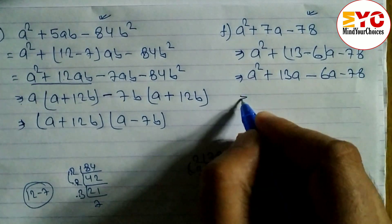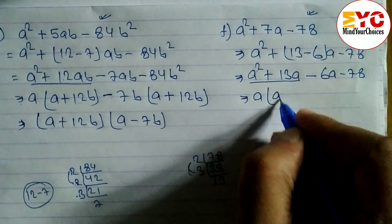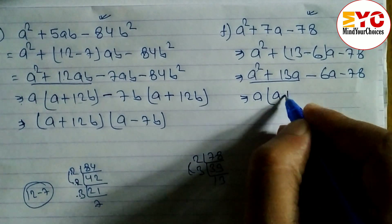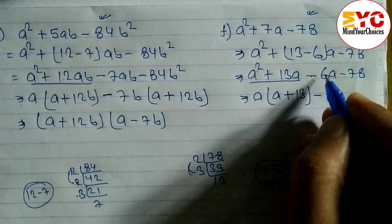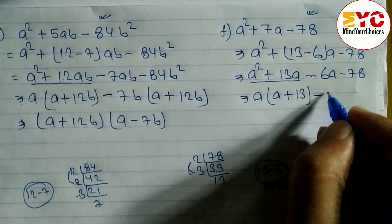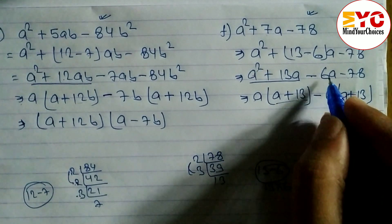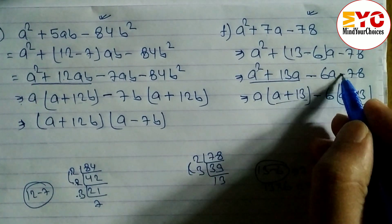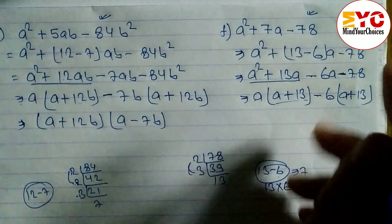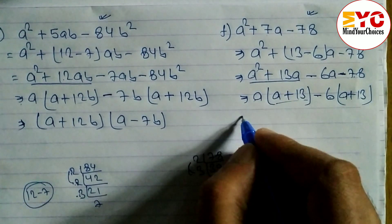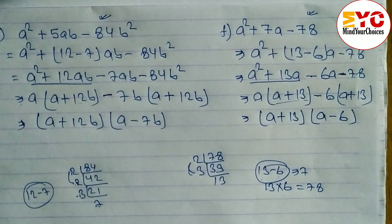From first two terms take a common: a(a + 13). From -6a - 78, take -6 common. When minus is common, change the sign: 6 × 13 = 78, giving -6(a + 13). Both groups show (a + 13), confirming correctness. Taking (a + 13) common, the answer is (a + 13)(a - 6). That completes problem F.